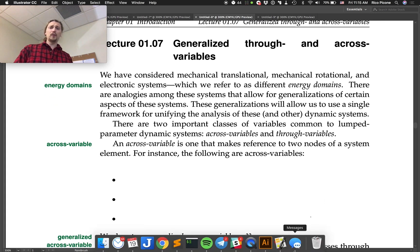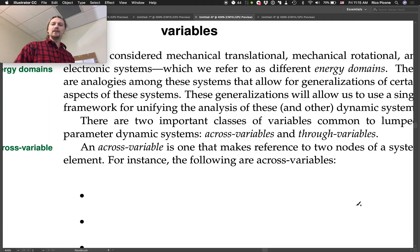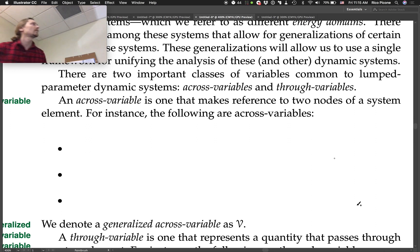There are two important classes of variables common to lump parameter dynamic systems: across variables and through variables. An across variable is one that makes reference to two nodes of a system element. So we're going to do some examples. In fact, we're going to exhaustively list the ones that we've considered so far.